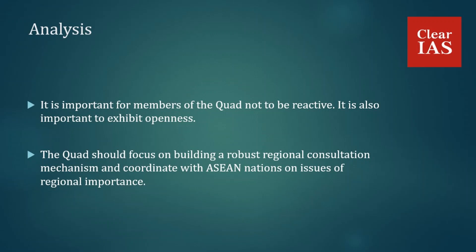The Quad will need to have a clearer vision for itself. It is important for the members not to be merely reactive, and to exhibit openness, ensuring that all talk of a free and open Indo-Pacific is more than just a slogan — it must be implemented. India, Japan, and Australia can take the lead in infrastructural projects, while the US also needs to be more proactive in pushing ahead the vision of connectivity.